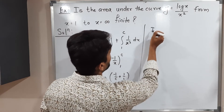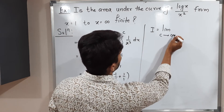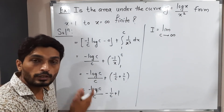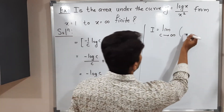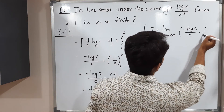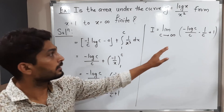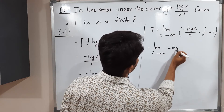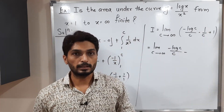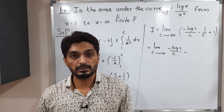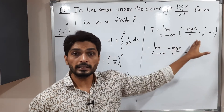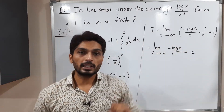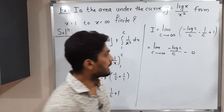Now we apply the limit. I equals limit as c tends to infinity of [−log(c)/c − 1/c + 1]. We can apply separate limits to each term. The second term: limit of 1/c as c→∞ gives 1/infinity = 0. The last term is the constant 1. For the first term, if we apply the limit, log(infinity) = infinity and the denominator is also infinity — giving an ∞/∞ indeterminate form.